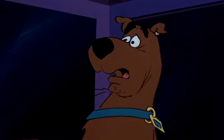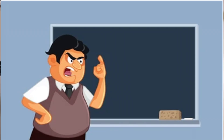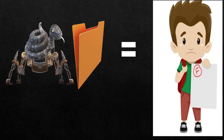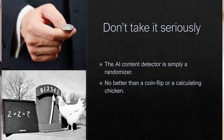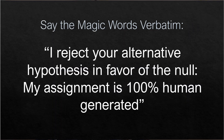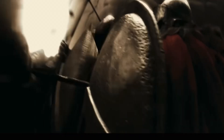Follow the burden of proof, starting with the professor. Tell your teacher that the AI content checker is no more accurate than a coin flip or a calculating chicken. Say these words verbatim: 'I reject your alternative hypothesis in favor of the null. My paper is 100% made by a human.'